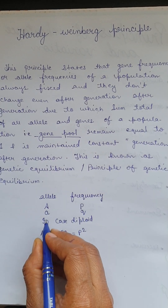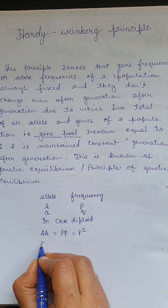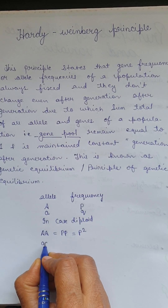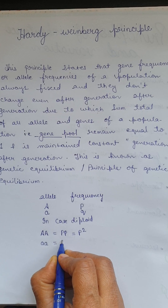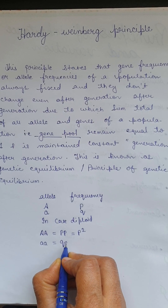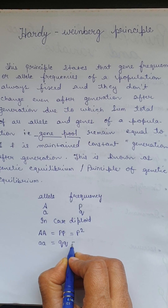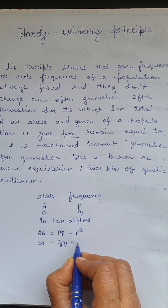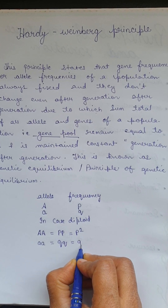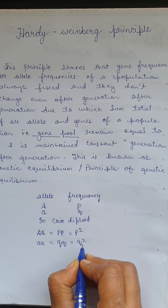So, small a small a is equal to Q, Q — and you can write this in the form of Q squared.